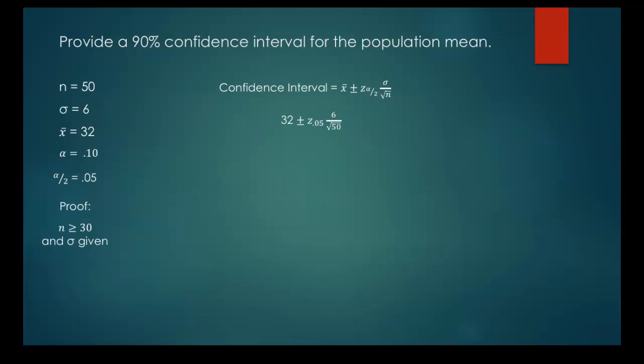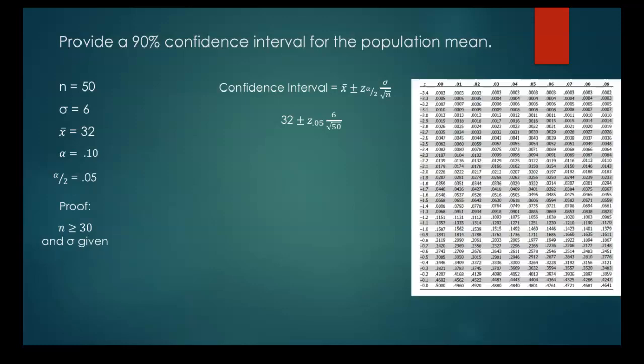Now we need to find a z-score for 0.05. So this is where we need to now take a look at our z-score chart. And we're going to be looking at the areas, so those numbers in the middle of this table, and we're going to be looking for whatever is closest to 0.05.